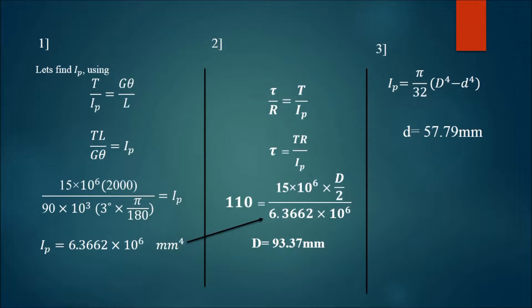Finally, in the third step, I know the value of Ip already, I know the value of D, and I have found the value of small d, which is 57.79 mm. So in this way you can calculate. I will wait for a while as you calculate.